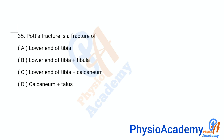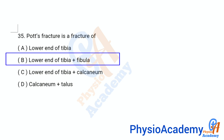Question number 35: Pott's fracture is a fracture of: option A lower end of tibia, option B lower end of tibia plus fibula, option C lower end of tibia plus calcaneum, option D calcaneum plus talus. The correct answer is option B, lower end of tibia plus fibula.